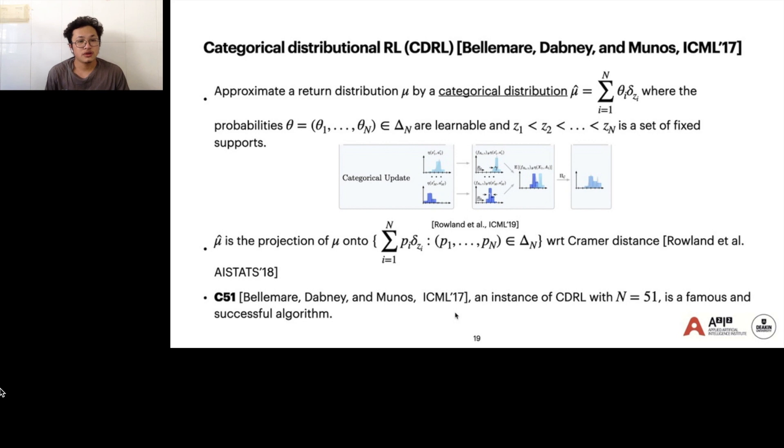Here are some famous approaches to distributional RL. The first one is categorical distributional RL, CDRL. The idea is to approximate the return distribution μ by a categorical distribution, which is a categorical distribution with learnable probability and fixed support Z_1 to Z_N. Theoretically, μ-hat is a projection of μ onto the sets of categorical distributions with respect to Cramér distance. C51 is the famous instance, CDRL with the particle number N equal to 51.